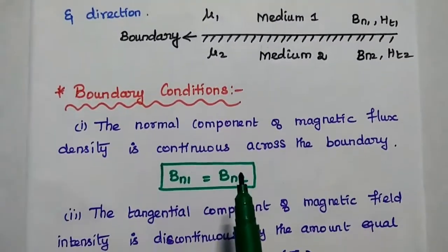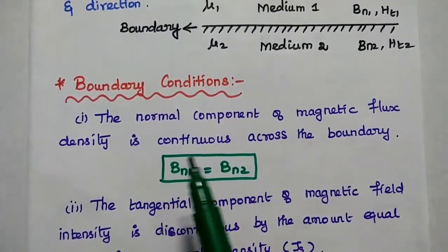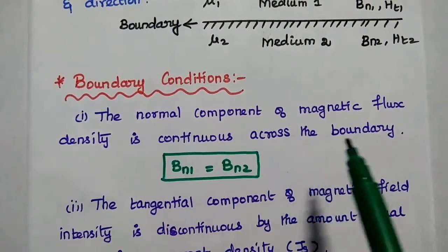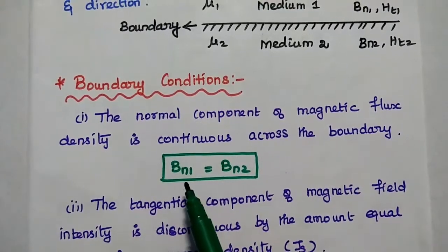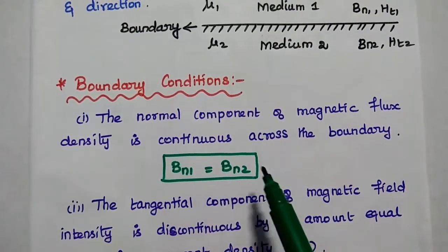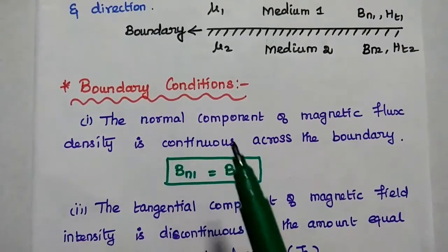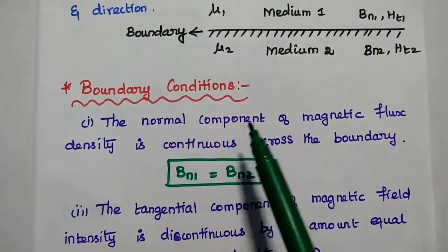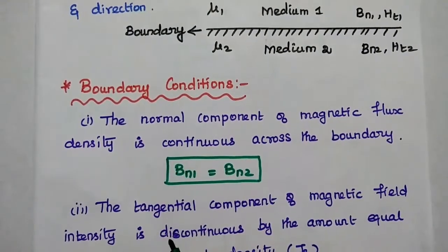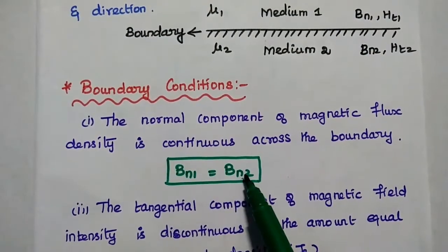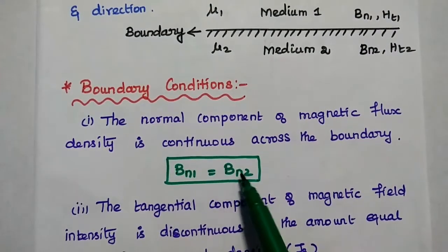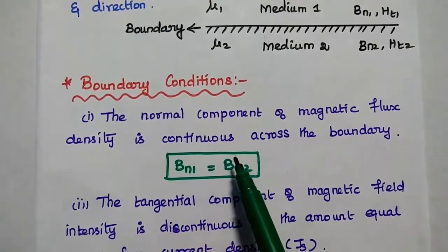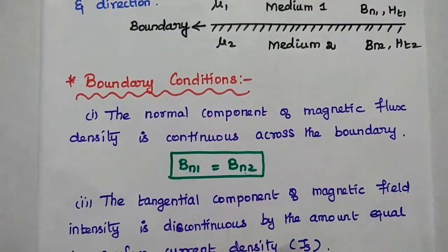There are two boundary conditions. The first one is: the normal component of magnetic flux density is continuous across the boundary. It is represented as Bn1 is equal to Bn2. Here, continuous means it is always equal — that is, the normal component of magnetic flux density in the first medium is equal to the normal component of magnetic flux density in the second medium. If both are the same, that is called continuous across the boundary.